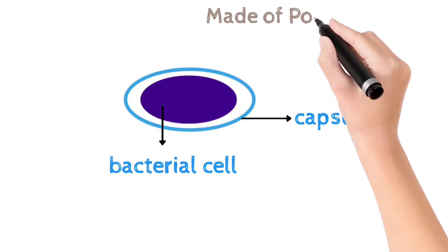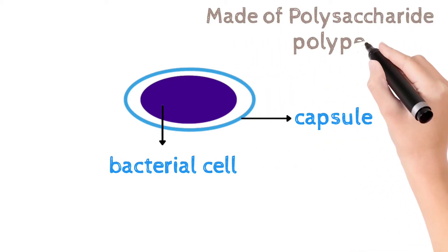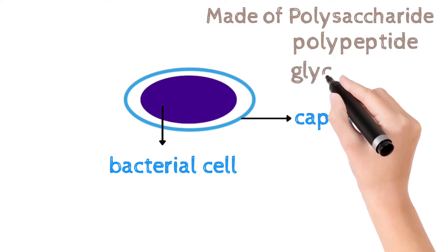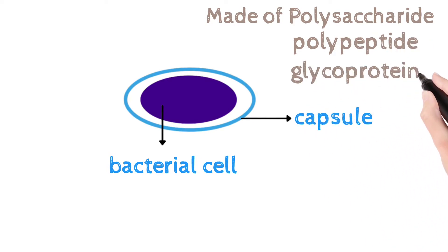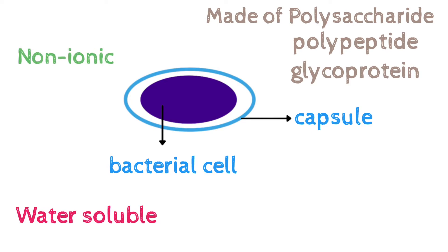Capsule is a gelatinous outer layer secreted by bacterial cells. Mostly these capsules are made up of polysaccharide, and some are made up of polypeptide or glycoproteins. In addition, capsules are soluble in water and non-ionic in nature.